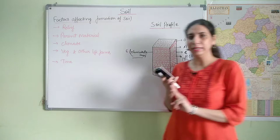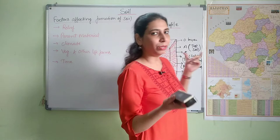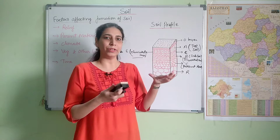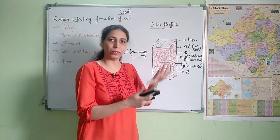To recap: mainly three layers — A, B, and C. We saw eluviation and leaching. Some minerals undergo downward movement through leaching. They come and deposit in the B layer. That deposition in B layer is called illuviation. That's clear up to here — soil profile we have covered.